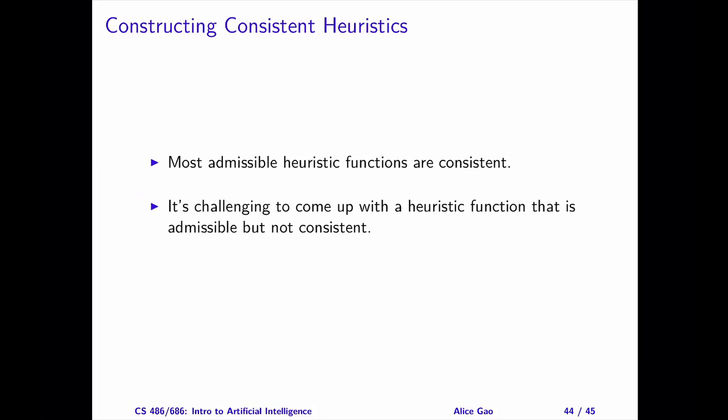That's everything on fixing the problem with multipath pruning. Let me summarize. After watching this video, you should be able to do the following: explain why LCFS with multipath pruning will not discard the optimal solution; explain why A-star search with multipath pruning may discard the optimal solution; describe several strategies to make A-star with multipath pruning optimal; and define a consistent heuristic. Thank you very much for watching. I will see you in the next video.